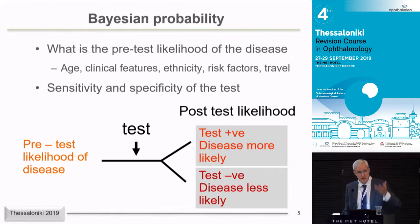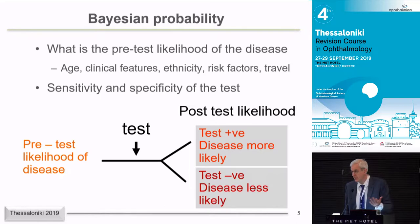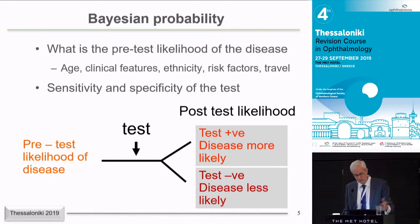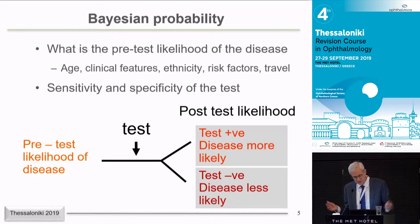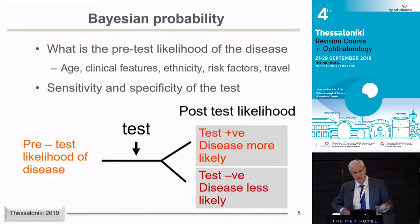This is a key slide. We need to get our heads around how we approach diagnostic testing — and this applies to anything we do every day as clinicians. The bottom line is we've got to figure out the likelihood of the disease before we do a test. That means considering age, ethnicity, demographics, clinical features, risk factors, travel, pets. Then we do a test, and depending on the results, the probability of the disease goes up or down. There's a mathematics to this.